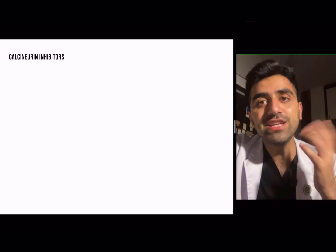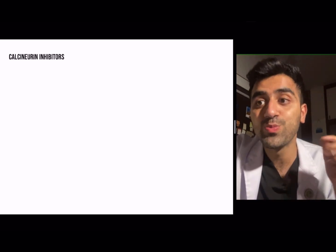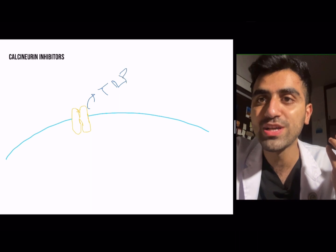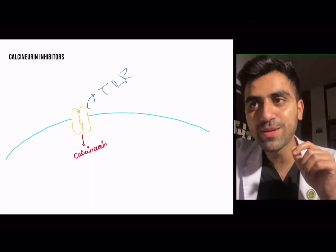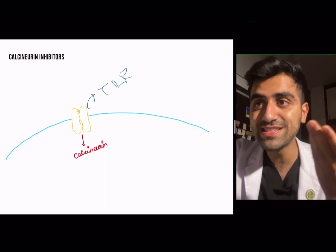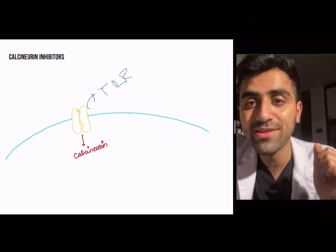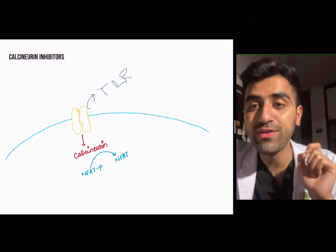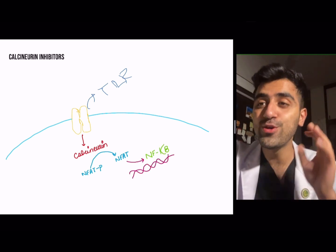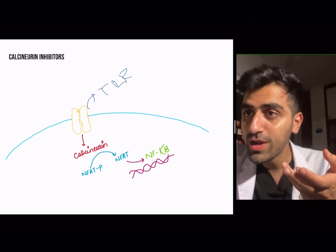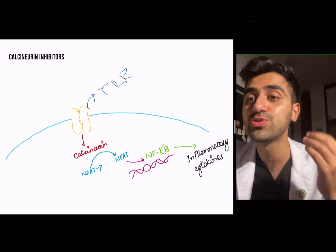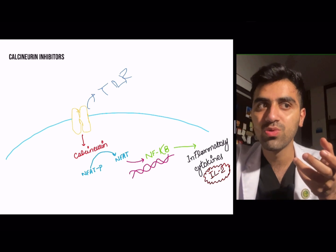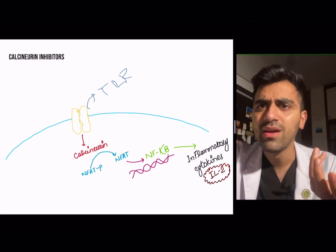Now let's start with each immunosuppressant class. Calcineurin inhibitors — where do they come in? The Toll-like receptor activates calcineurin, which dephosphorylates NFAT-P into nuclear factor of activated T cells, which activates NFκB, which produces inflammatory cytokines — particularly IL-2. So calcineurin inhibitors obviously inhibit calcineurin.